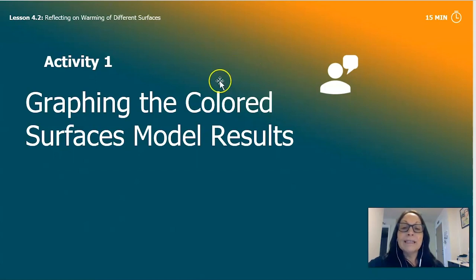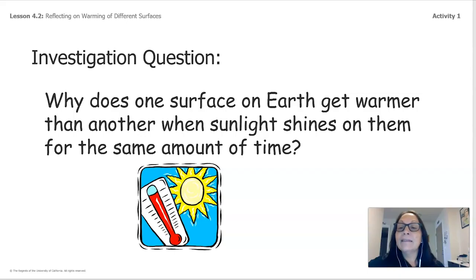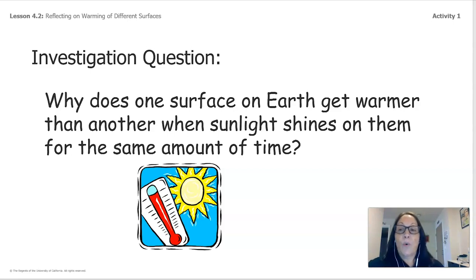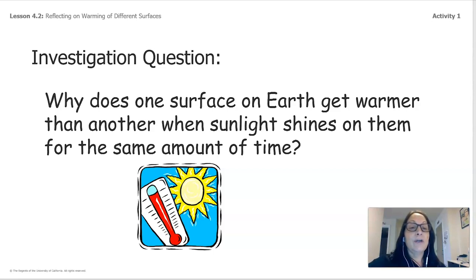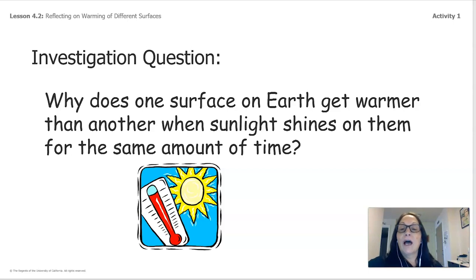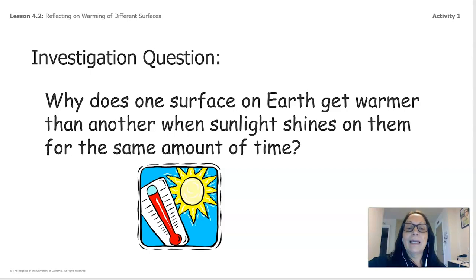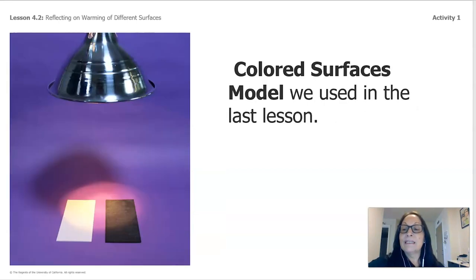In this section we're going to talk about graphing the colored surfaces model. Our investigation question is: why does one surface on earth get warmer than another when sunlight shines on them for the same amount of time? I want you to think about how weather scientists think — that needs to be our focus for this lesson.